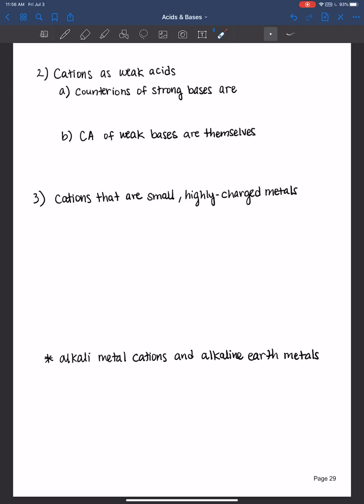So if we're looking at counter ions of strong bases, then these particular cations are actually pH neutral. And so those cations are, if you look down below, alkali metal cations which are in the group 1A and the periodic table and alkaline earth metals, which are group 2A.